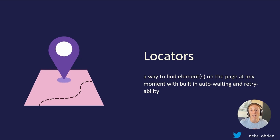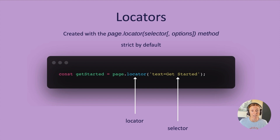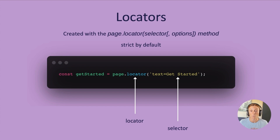Locators are a way to find elements on the page at any moment, with built-in auto-waiting and retryability — you don't need to do anything extra, it just works out of the box. You create a locator with page.locator() and a selector with options. It's strict by default, as we saw. For example: const getStarted = page.locator('text=get started'). You can use CSS selectors, ID selectors, and many more. Check out the docs on selectors for more information.